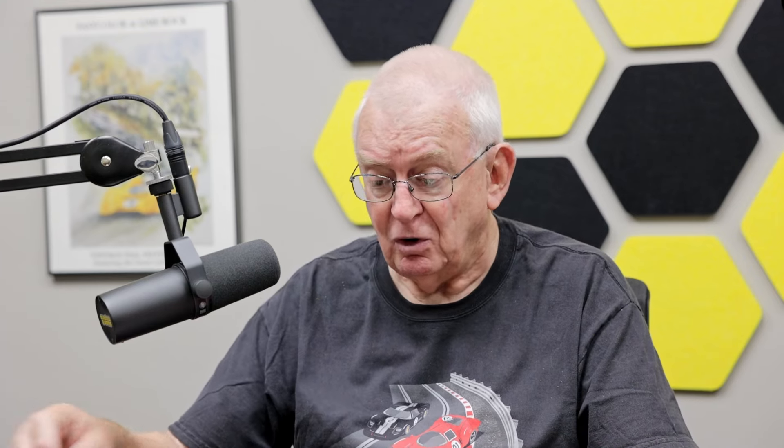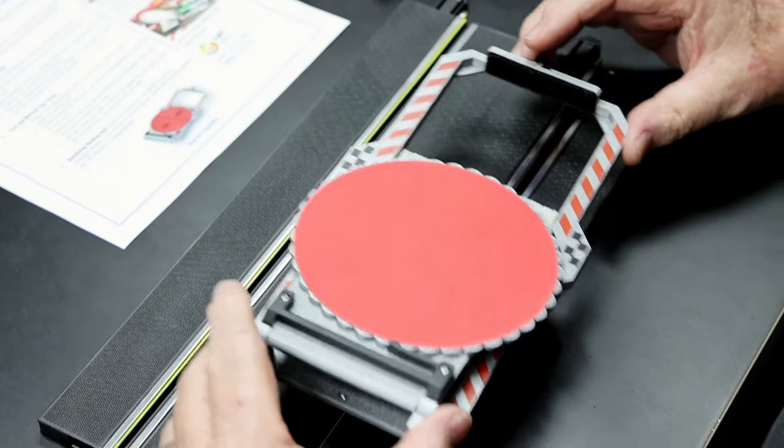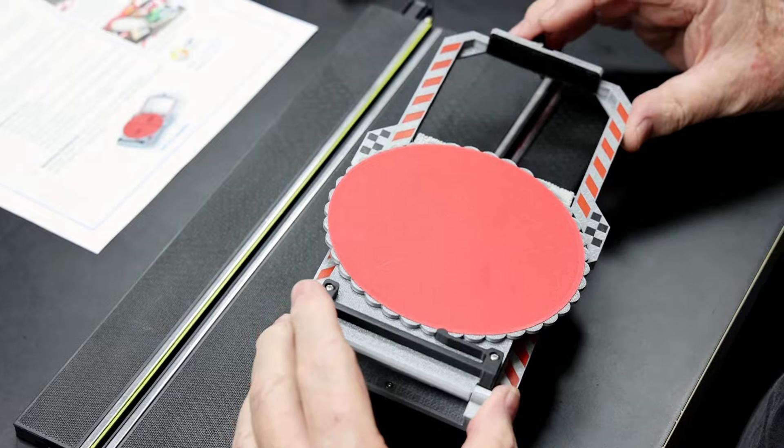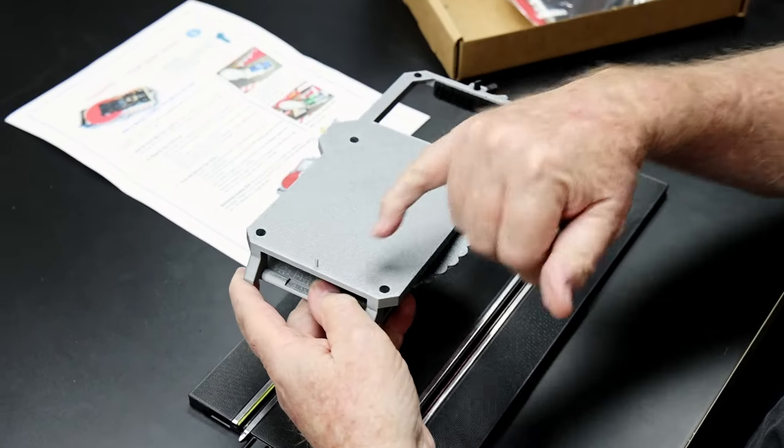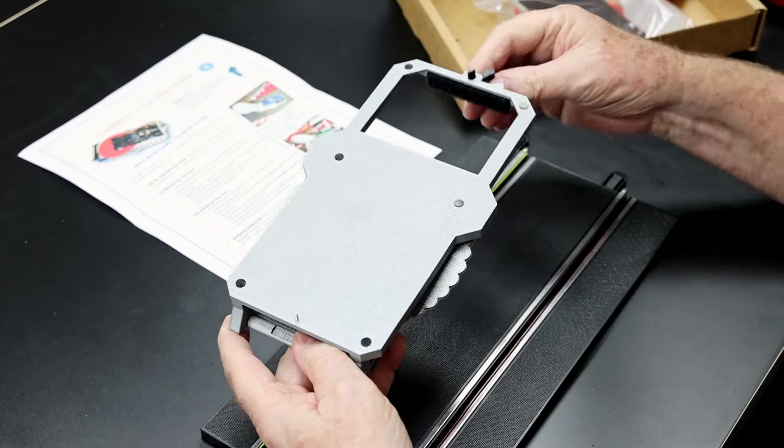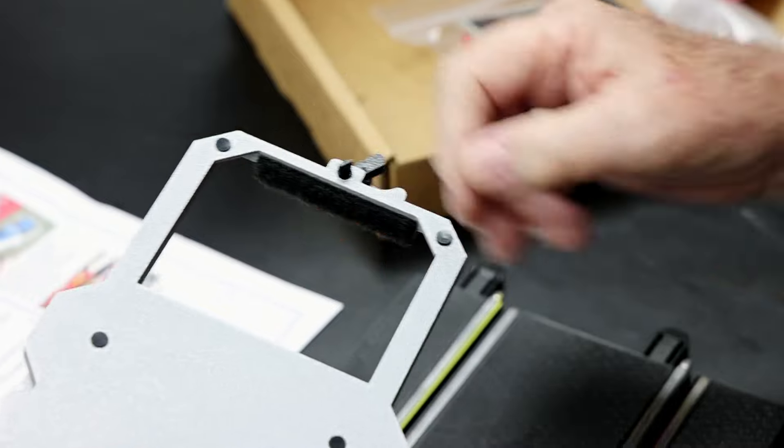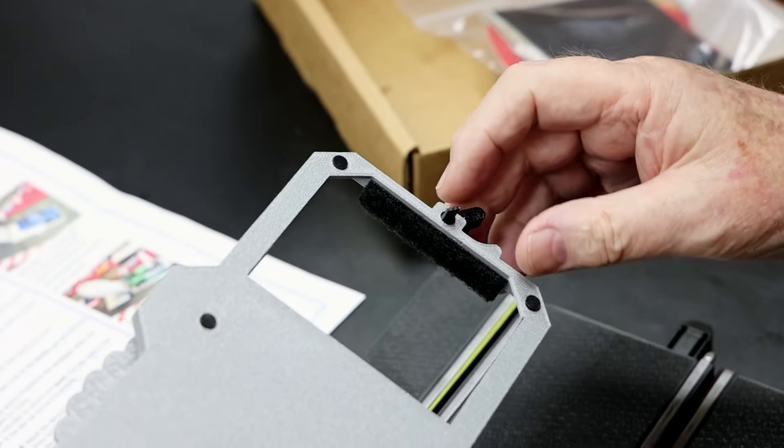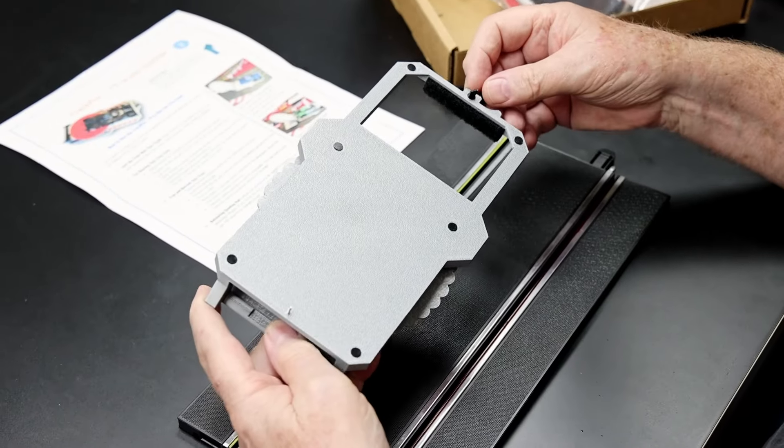So how does this work? Well it fits onto your track. I've just got a piece of track here in front of me. On the underneath there is a little pin at one end and a clip at the other end, a spring-loaded clip that allows the tire truer or the scuffer to be locked into the slot.